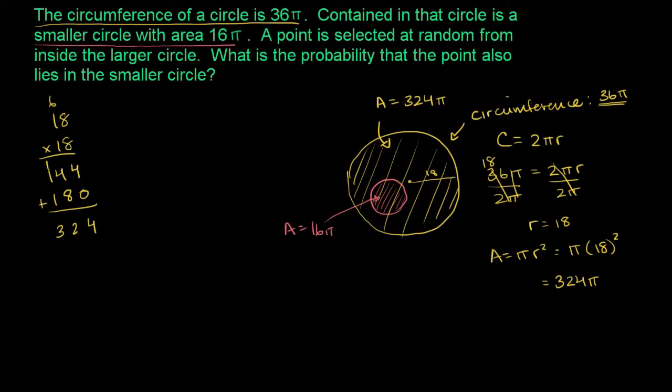So our probability, the probability that the point also lies in the smaller circle is going to be equal to the percentage of this larger circle that is the smaller one. Or the fraction of the larger circle's area that is the smaller circle's area. So it's going to be 16 pi over 324 pi.